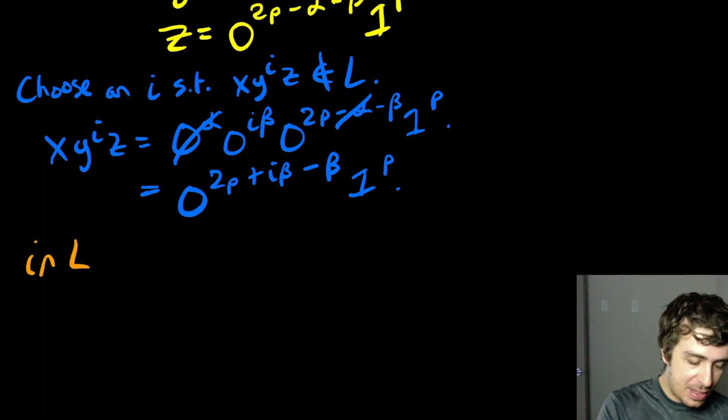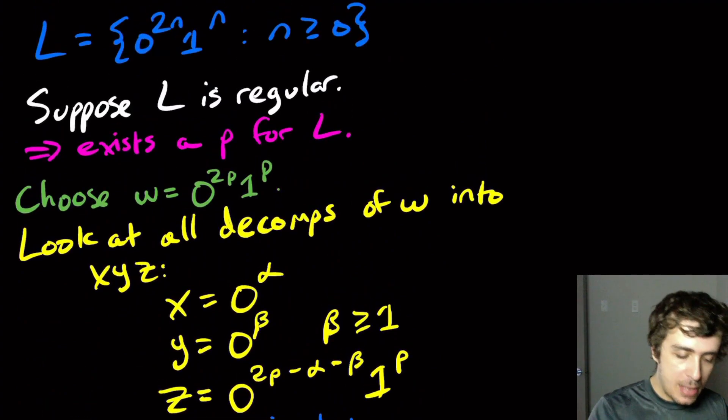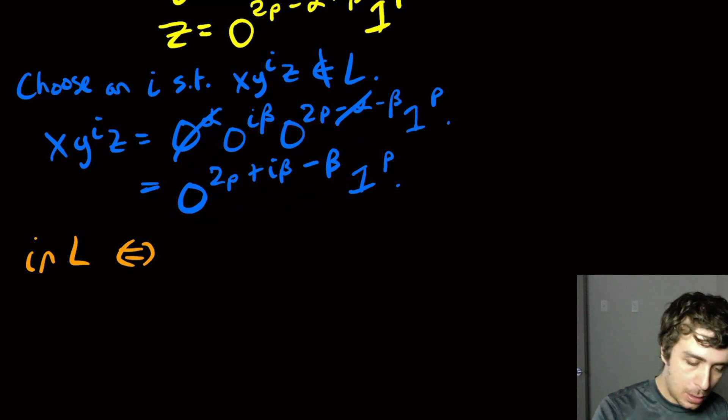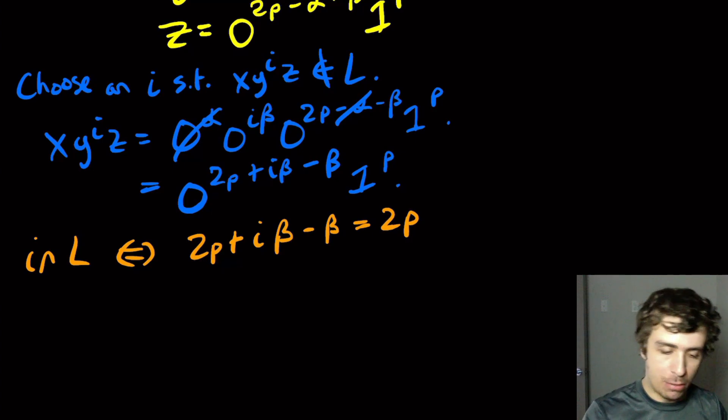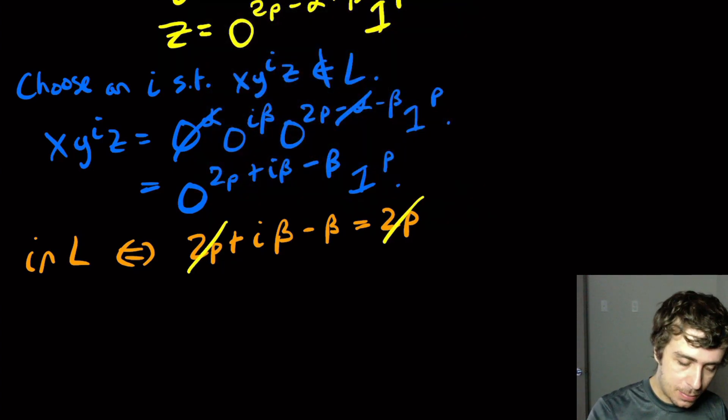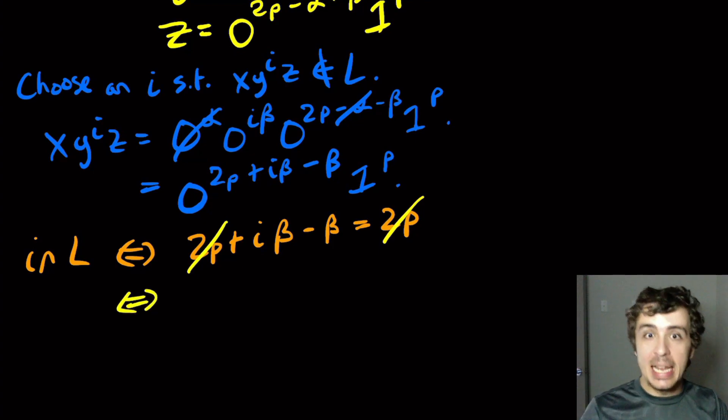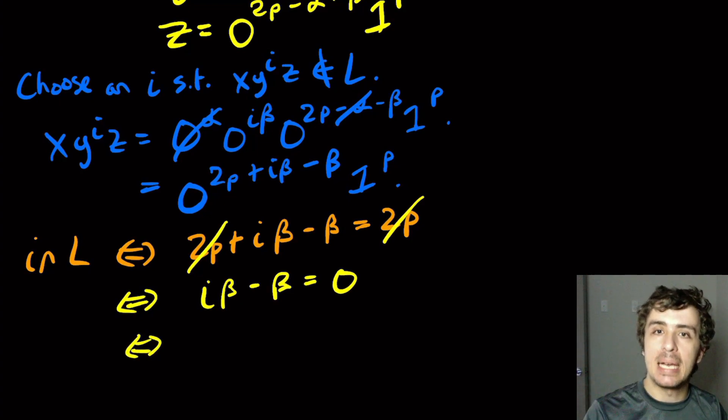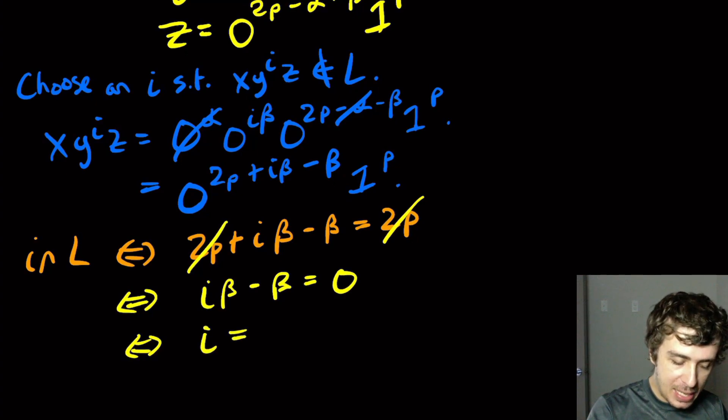Okay, so we want to see when this thing is in the language so we can pick an i for which it isn't in the language. So this is in the language if and only if, well, the language says that the number of zeros at the beginning is exactly twice the number of ones at the end. So that means that 2 times this number is equal to this number. So 2p plus i beta minus beta equals 2p. That's the condition to be in the language. Well, here we can just subtract from both sides. And this is the same. This is in L if and only if this is true. So we're going to have i beta minus beta equals 0. I'm going to add beta on both sides and divide by beta, because I'm allowed to do that because beta is not 0. It's at least 1. So that's if and only if i is equal to 1.